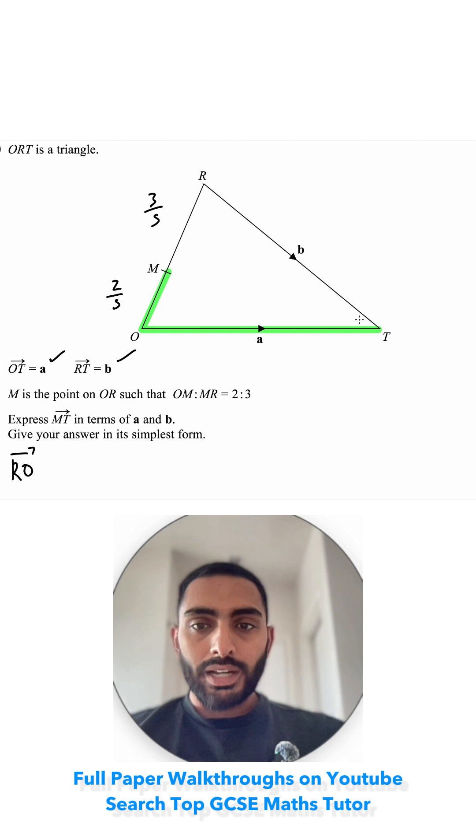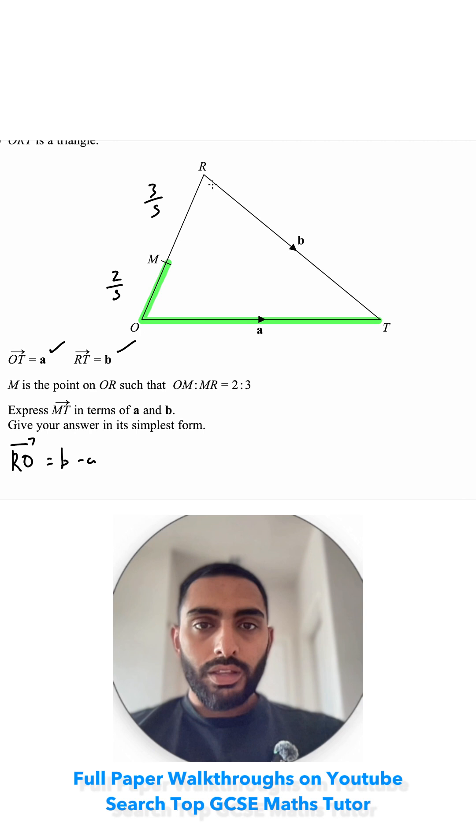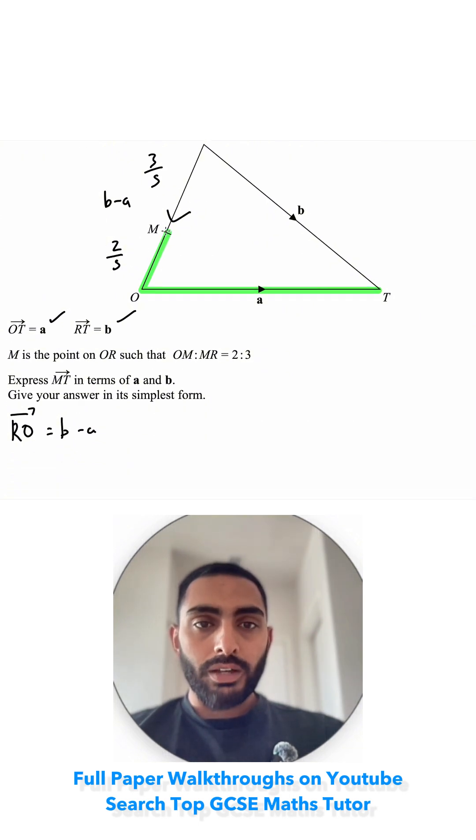RO - I'm going down to T, so I'm adding B and then taking away A. That gets me from there to there. So this vector is B minus A, and I just want 2 fifths of that to get from M to O.